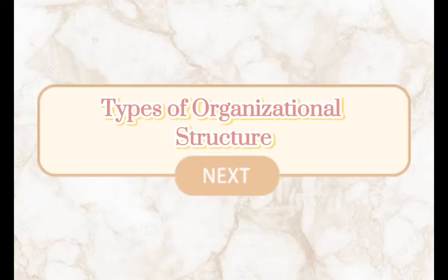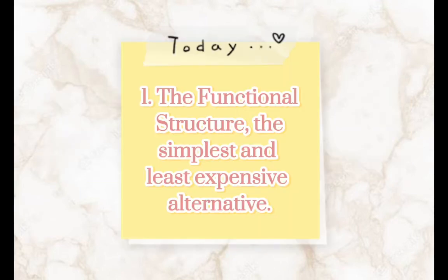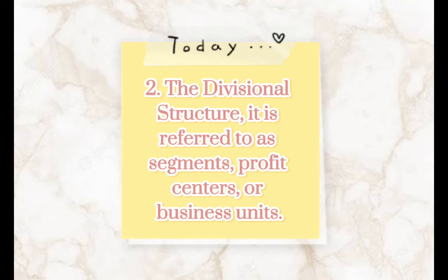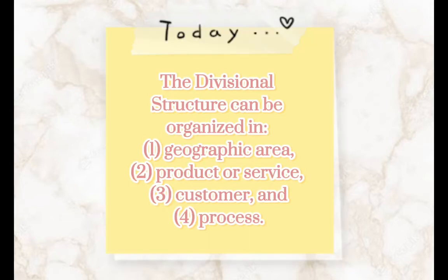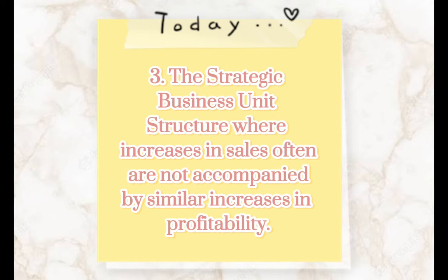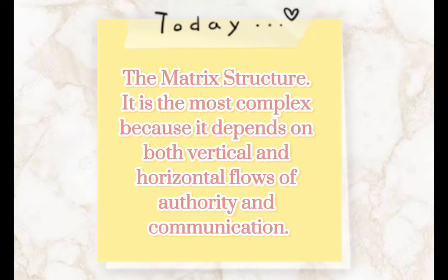Types of organizational structure. One: the functional structure — the simplest and least expensive alternative. Two: the divisional structure — referred to as segments, profit centers, or business units, and can be organized by geographic area, product or service, or customer. Three: the strategic business unit structure, where increases in sales are often not accompanied by similar increases in profitability. Four: the matrix structure — the most complex, depending on both vertical and horizontal flows of authority and communication.